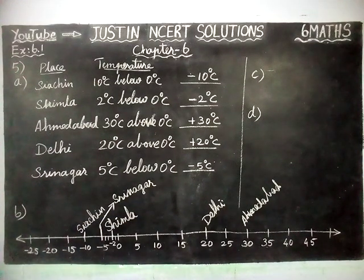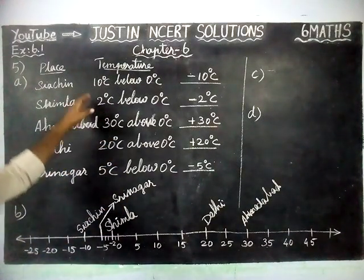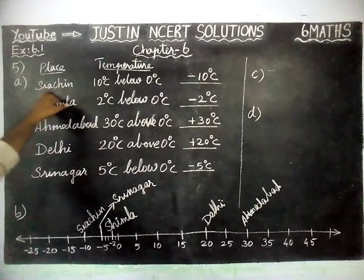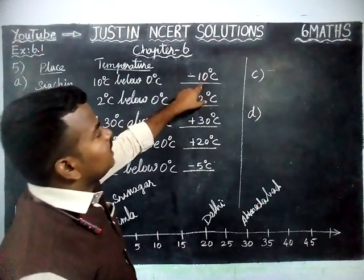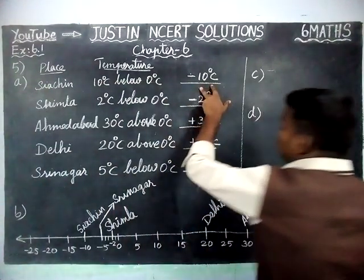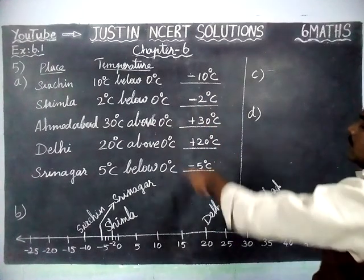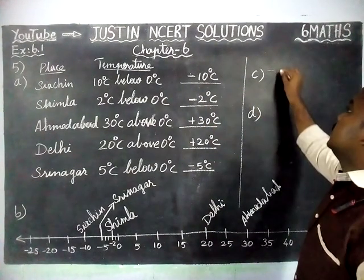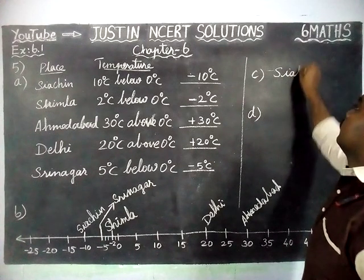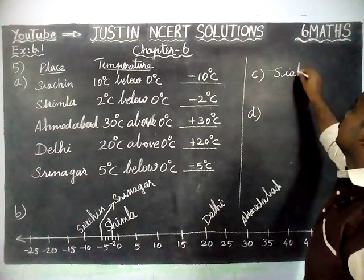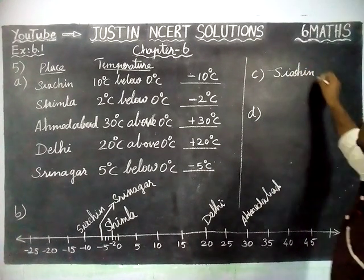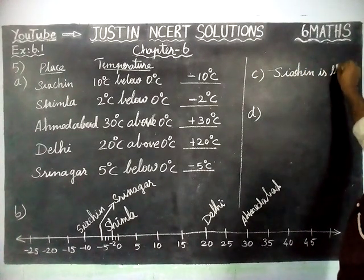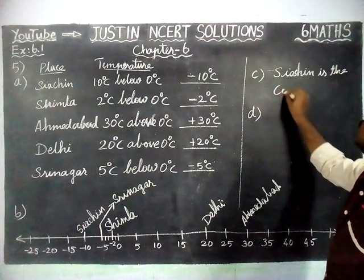Which is the coolest place? The meaning of coolest is the smallest value — the most negative temperature. Here, Siachin is minus 10 degree Celsius. This is the coolest place among these 5 cities. So Siachin is the coolest place.